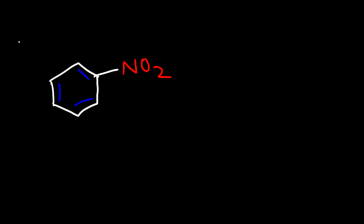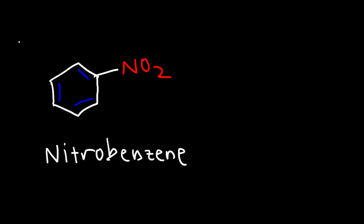Let's say if we have a benzene ring with an NO2 group attached to it — what's the name of this molecule? The NO2 group is called nitro, so combined this is called nitrobenzene. I recommend having a piece of paper to write these names down, because these parent names you need to commit to memory.